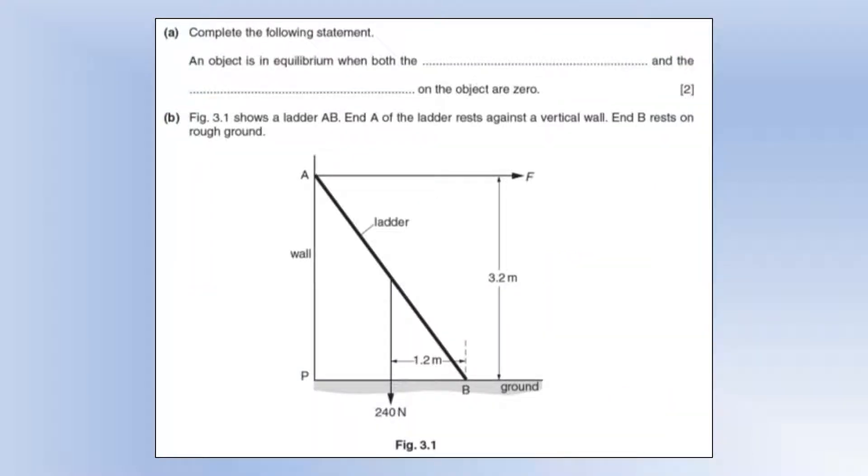The final question we're going to look at is a classic moments type question, which is a ladder problem. So let's start off. Complete the following statement: An object is in equilibrium when both the blank and the blank on an object are zero. So the two things we need are the resultant force and the resultant moment on the object should be zero for it to be in equilibrium.